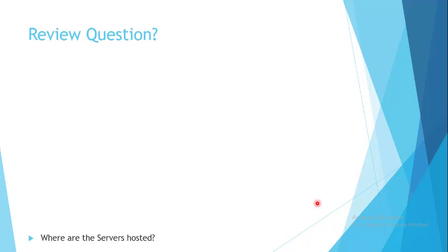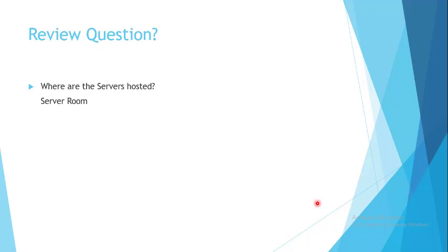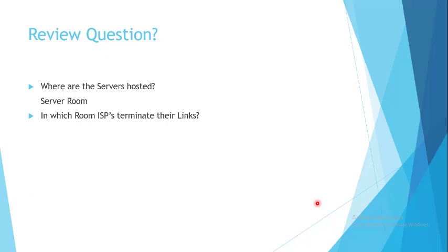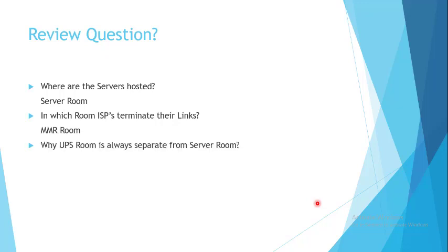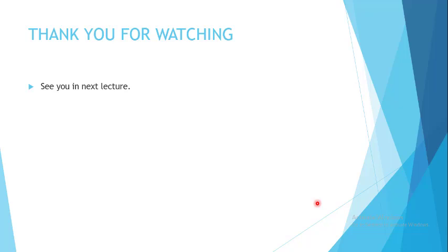Some review questions: Where are the servers hosted? Servers are hosted in the server room. In which room do ISPs terminate their links? They terminate in the MMR room. Why is the UPS room always separate from the server room? Because it emits electromagnetic waves which can affect your IT assets. That's it for today's lecture — thank you for watching, see you in the next lecture.